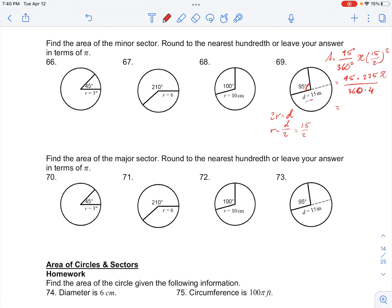And I don't think we can simplify this anymore, so we have 95 times 15, giving us 1425π over 96.